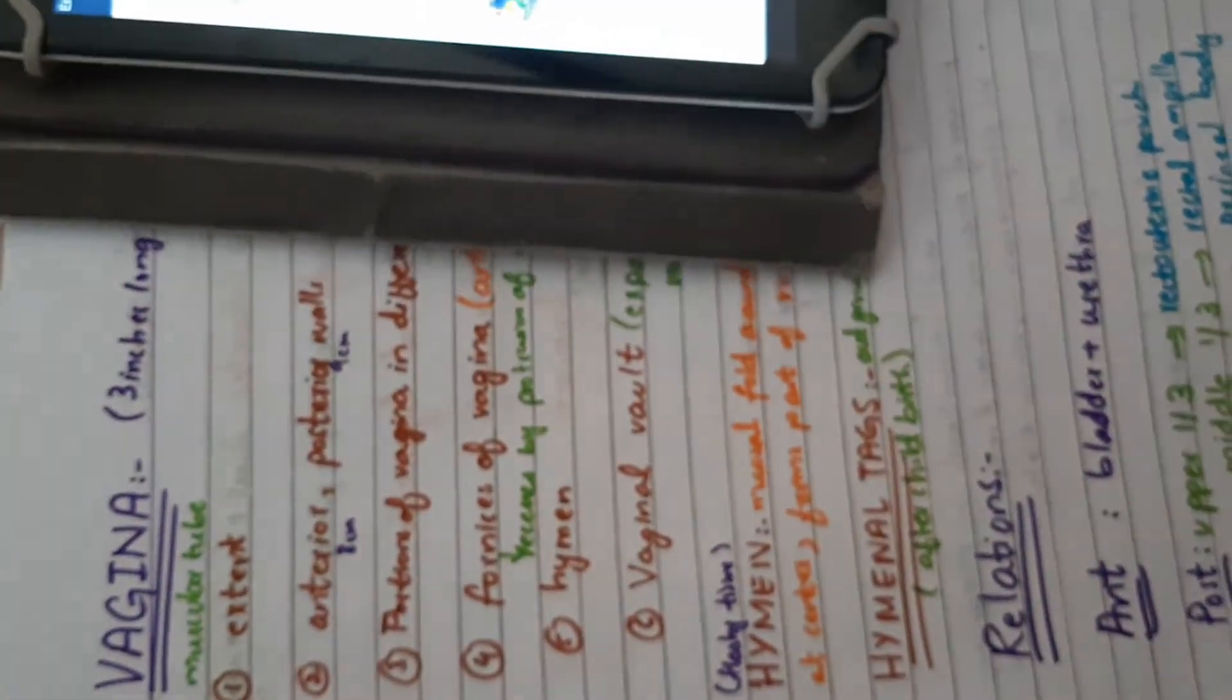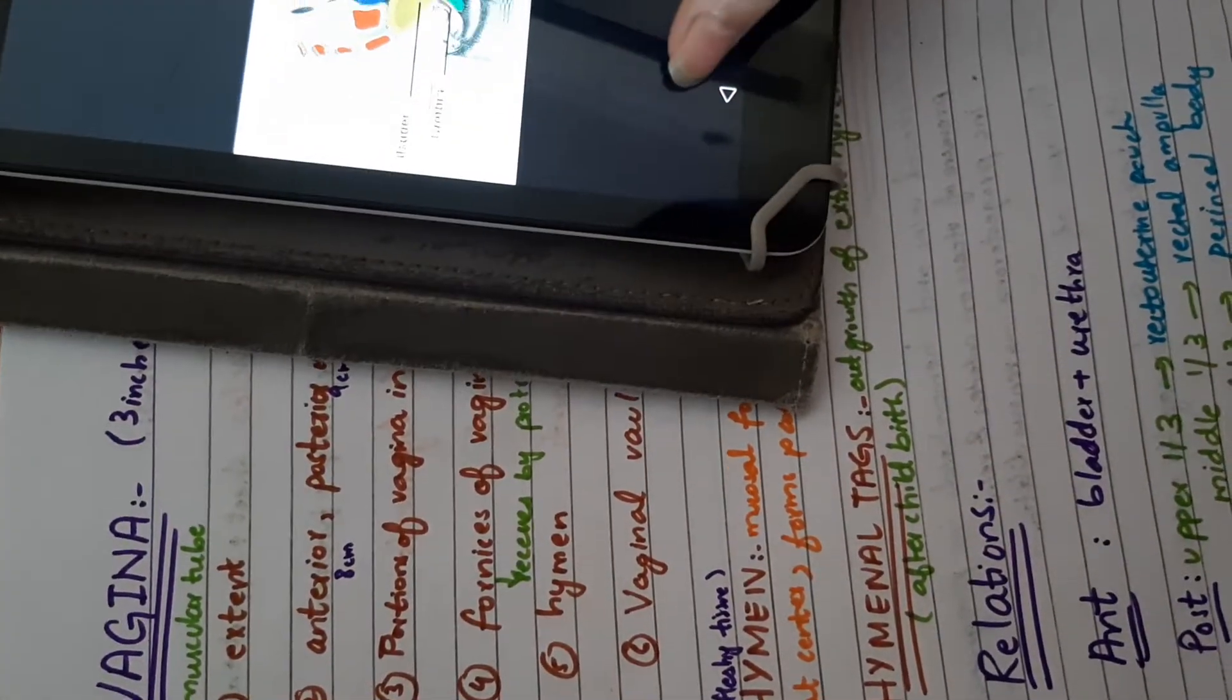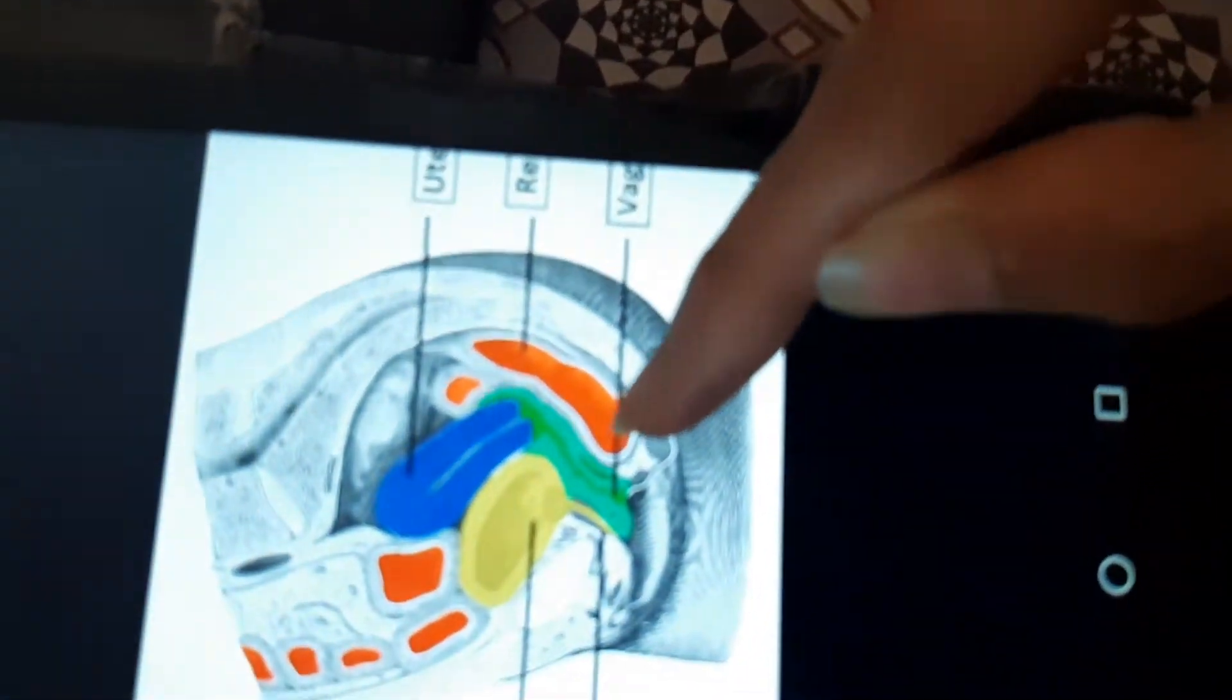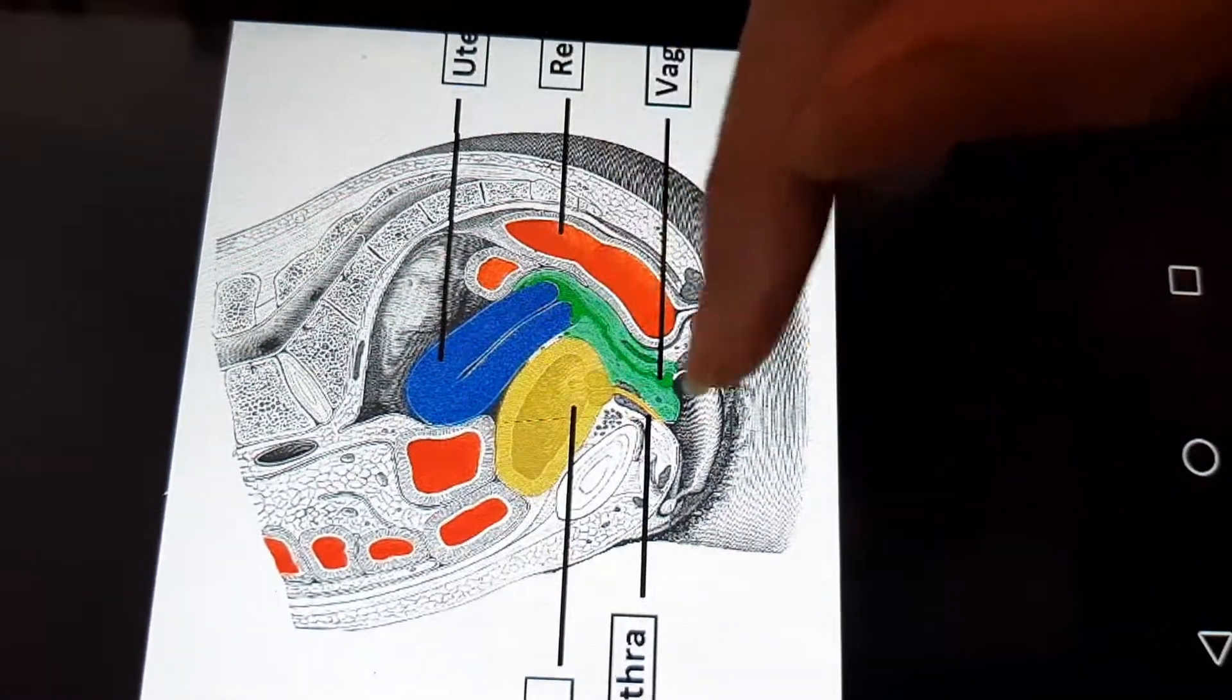We will start with relations of vagina. Anteriorly there is bladder and urethra. This is vagina. Vagina's upper part is related to bladder and lower part is related to urethra.